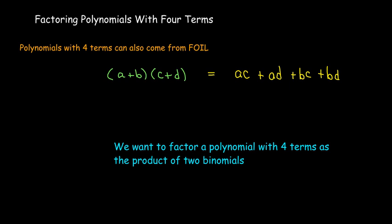The idea is that you can get a polynomial with four terms from the product of two binomials. So our goal is to start with four terms and work back to get a product of two binomials. You can't always do this, but you can always try.